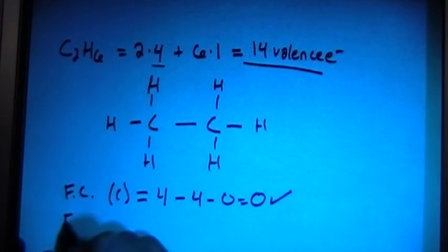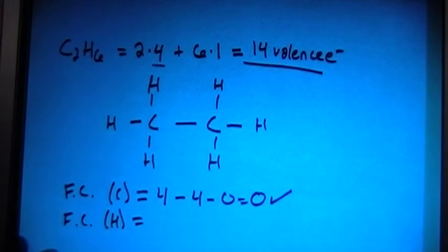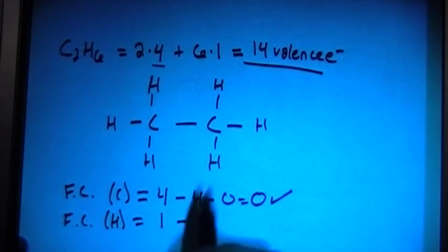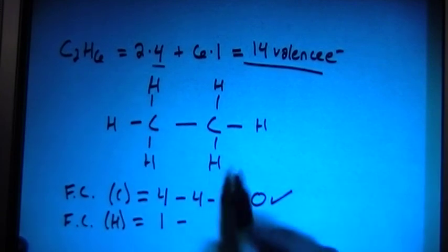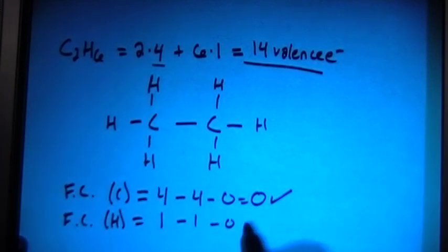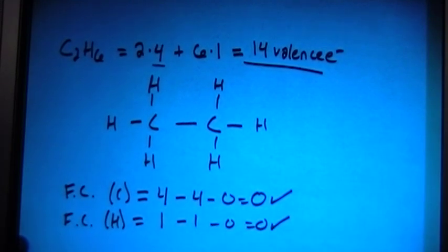Now check the formal charge on the hydrogens, and that is going to be the number of valence brought in, 1, minus the number of bonds for each one, which is just 1, minus the number of non-binding electrons, 0. That's also 0. So that's exactly what we're looking for. That's very good.